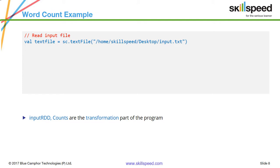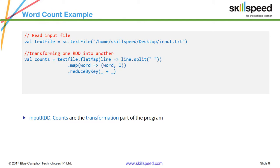Once you have the data in the textFile RDD, I'm creating another RDD called counts — val counts. On the textFile RDD I'm first applying a flatMap transformation: line => line.split(" ") to split each line by space. Then I'm applying a map transformation: word => (word, 1), converting every word into a key-value pair where the word is the key and one is the value. Then I'm doing a reduceByKey.